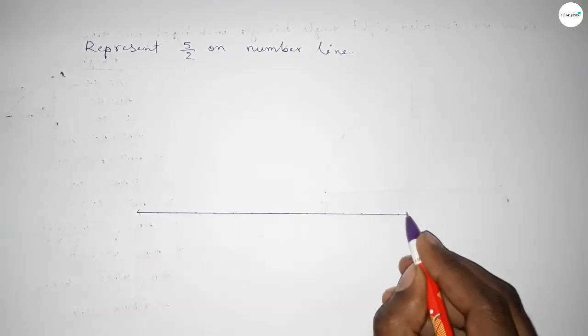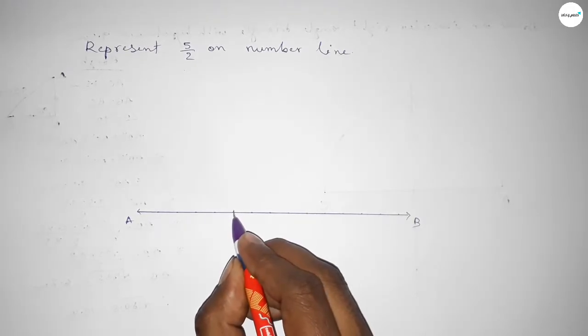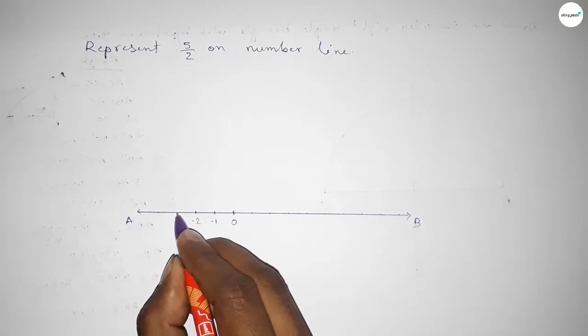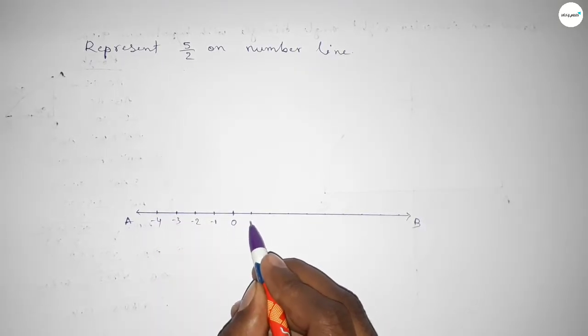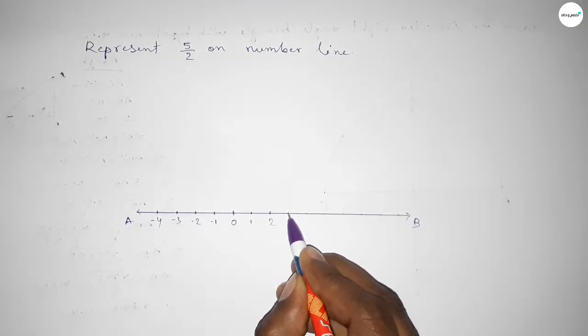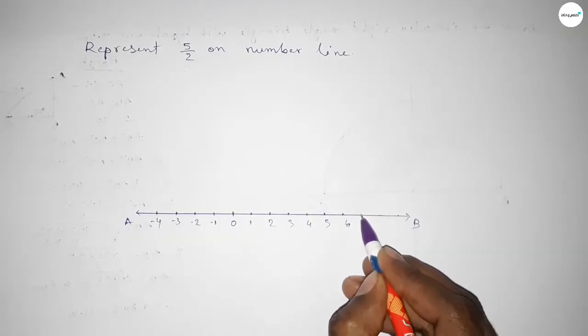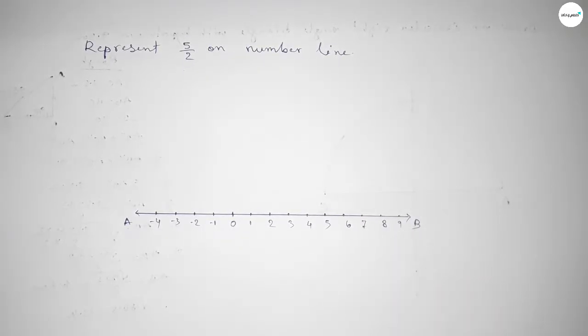Next, taking arrow mark here and this is a B line. Now this is starting zero. On this side minus one, minus two, minus three, minus four, and this side one, two, three, four, five, six, seven, eight, nine. Now...